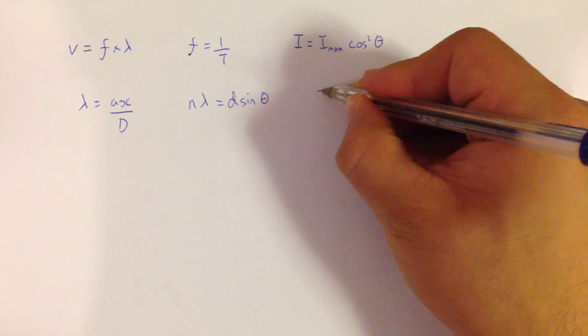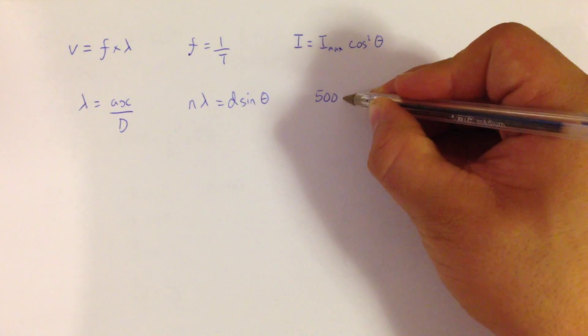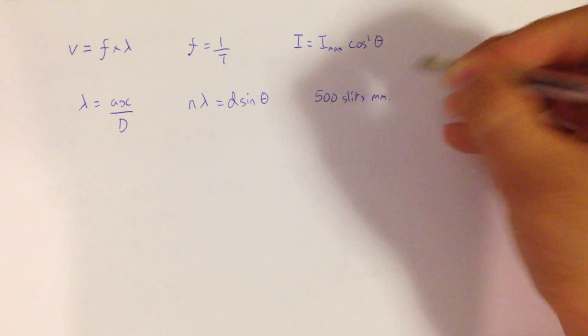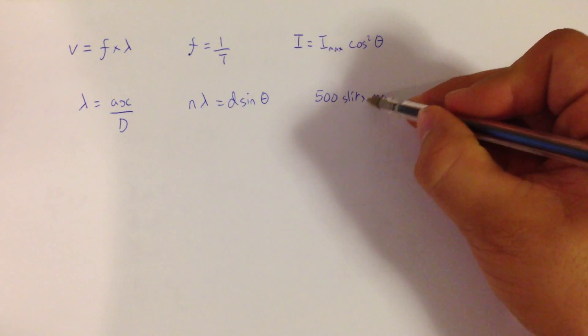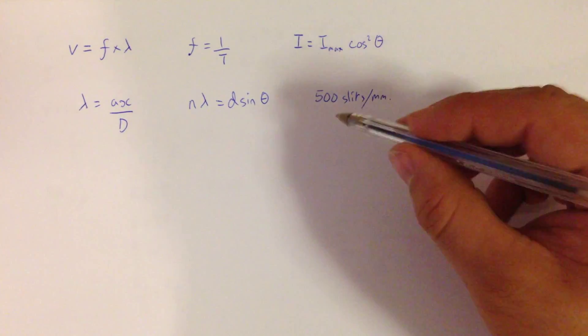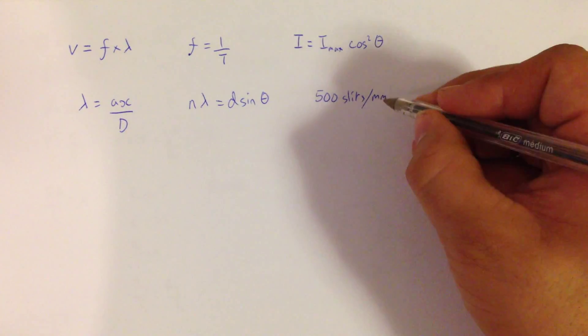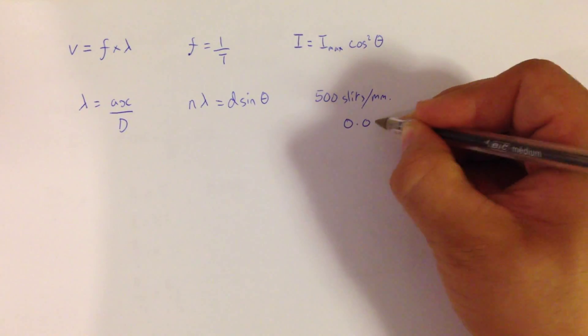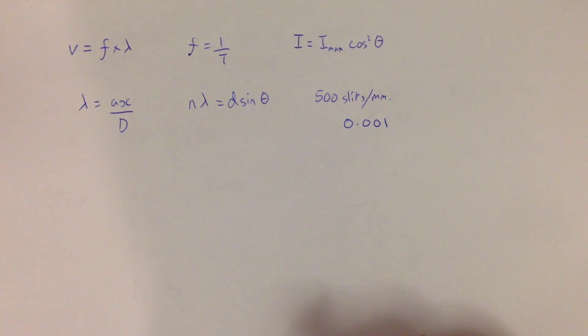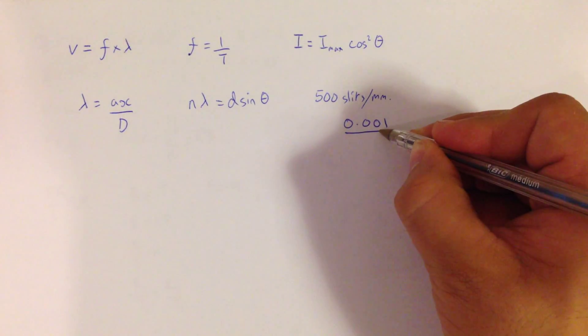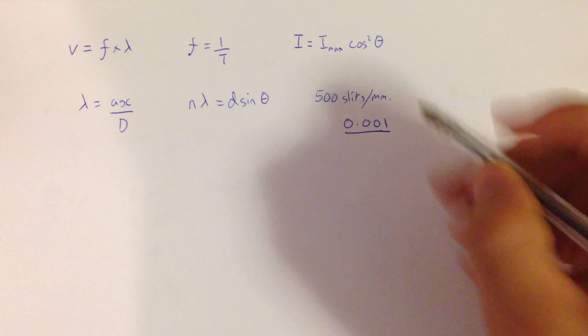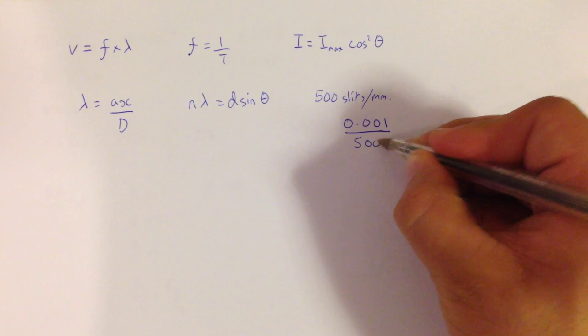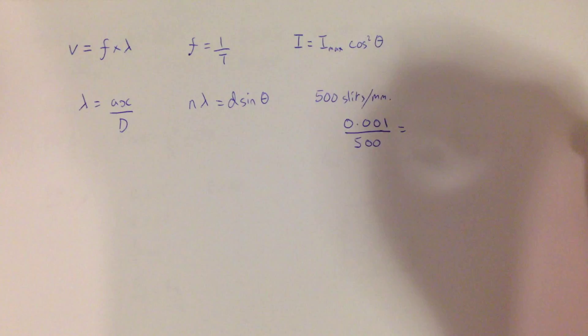So often you might get told, for example, that you have 500 slits per millimetre, and you want to know what the distance is between them. So what you need to do, for 1 millimetre, which is 0.01 metres, how many times 500 will go into that, and that will give you your distance between each of your individual slits, which in this case would be 5 times 10 to the minus 6.